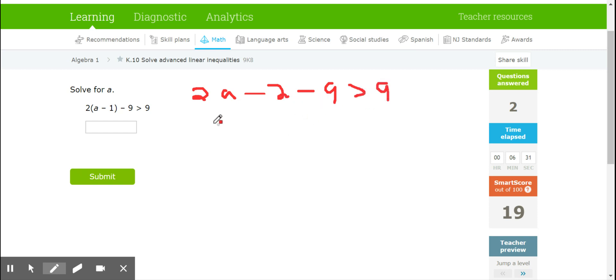Now we would simplify our like terms. So it's going to give me 2A minus 11 is greater than 9. Add 11, and that gives you 2A is greater than 20. Divide both sides by 2, and A is greater than 10.